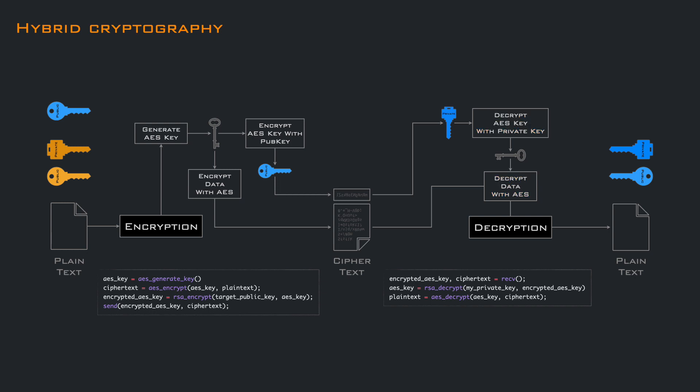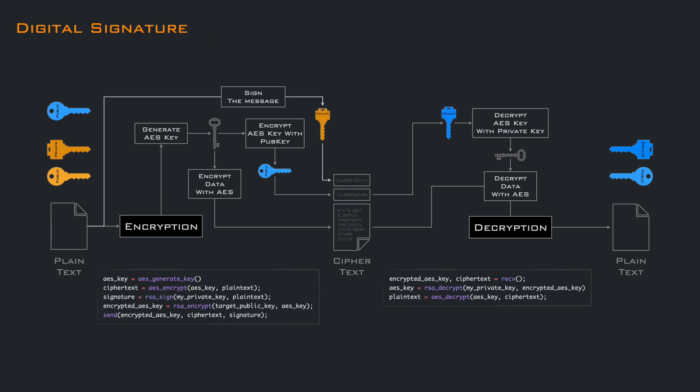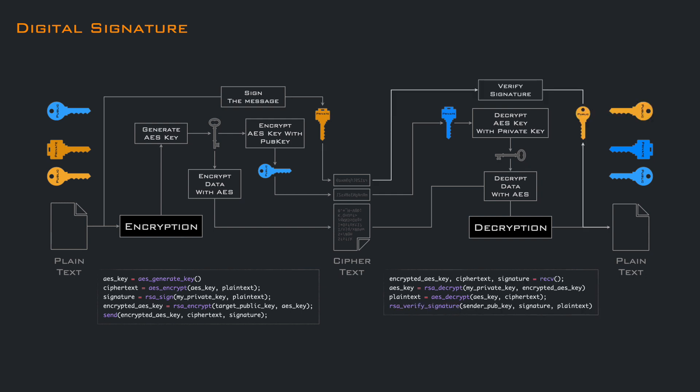But there is one more problem. What we did ensures that only the owner of the private key is able to decrypt the message, but anyone can send encrypted messages since the public key is public. So, how can we verify the authenticity of the sender? To do that, we can leverage digital signatures. Using the private key of the sender, we can create a signature of the message and send it along with the key and encrypted data. On the other side, once we have decrypted the message, we can check if the signature matches by using the public key of the sender.